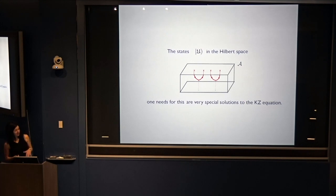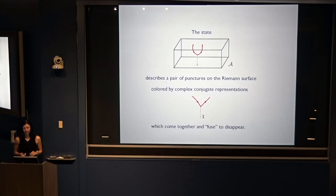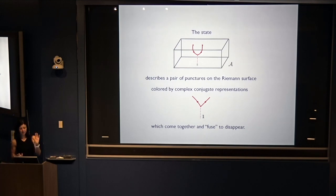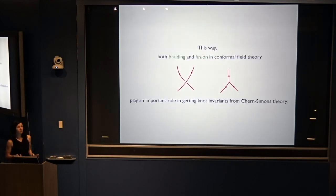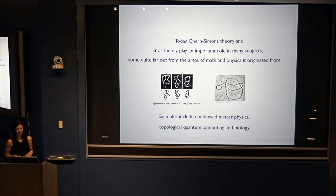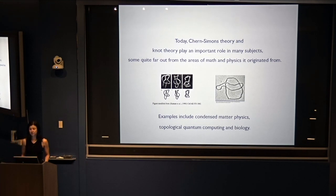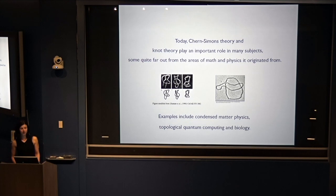The states in the Hilbert space needed for that are some very special solutions of the KZ equation. The state containing a cap describes a pair of punctures on the Riemann surface colored by complex conjugate representations that come together and fuse to disappear. This is a special instance of fusion where a pair of charged particles fuse to a single one. So both braiding and fusion in conformal field theory play an important role in getting knot invariants from Chern-Simons theory. Today, Chern-Simons theory and its knot invariants play an important role in many subjects, including condensed matter physics, topological quantum computing, and biology.